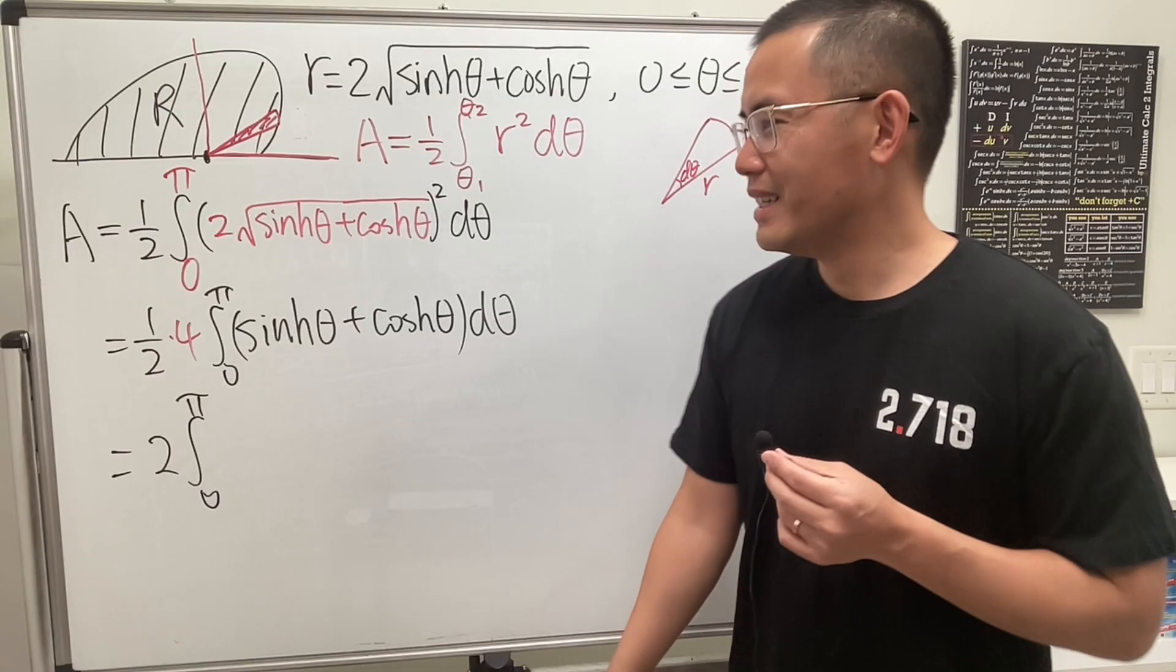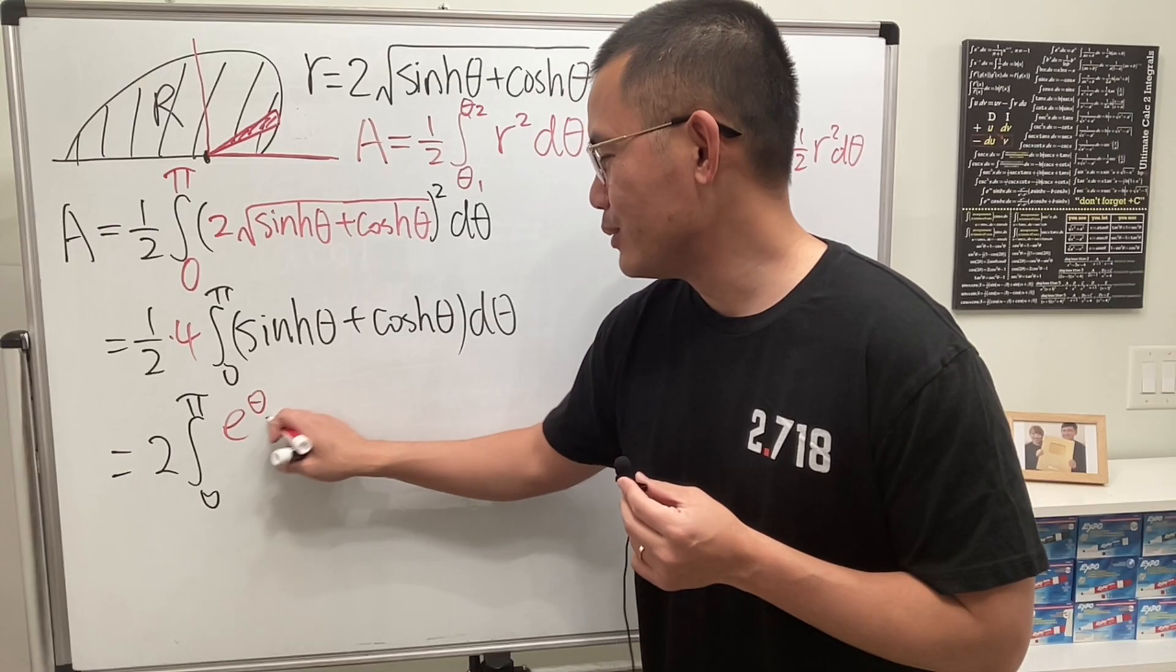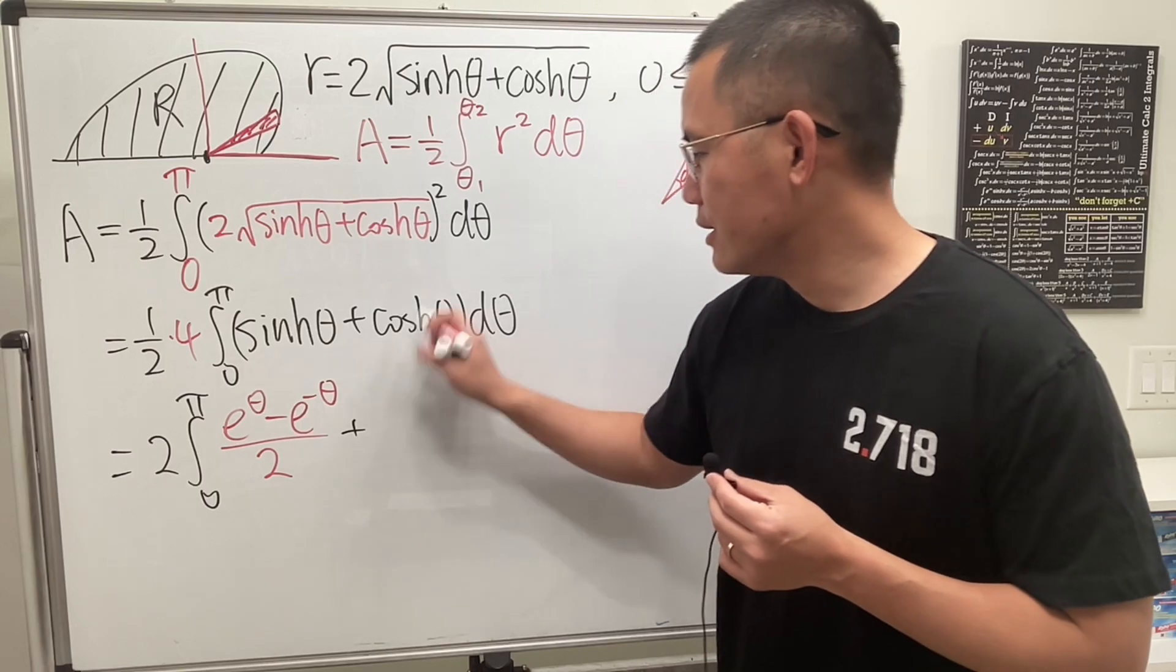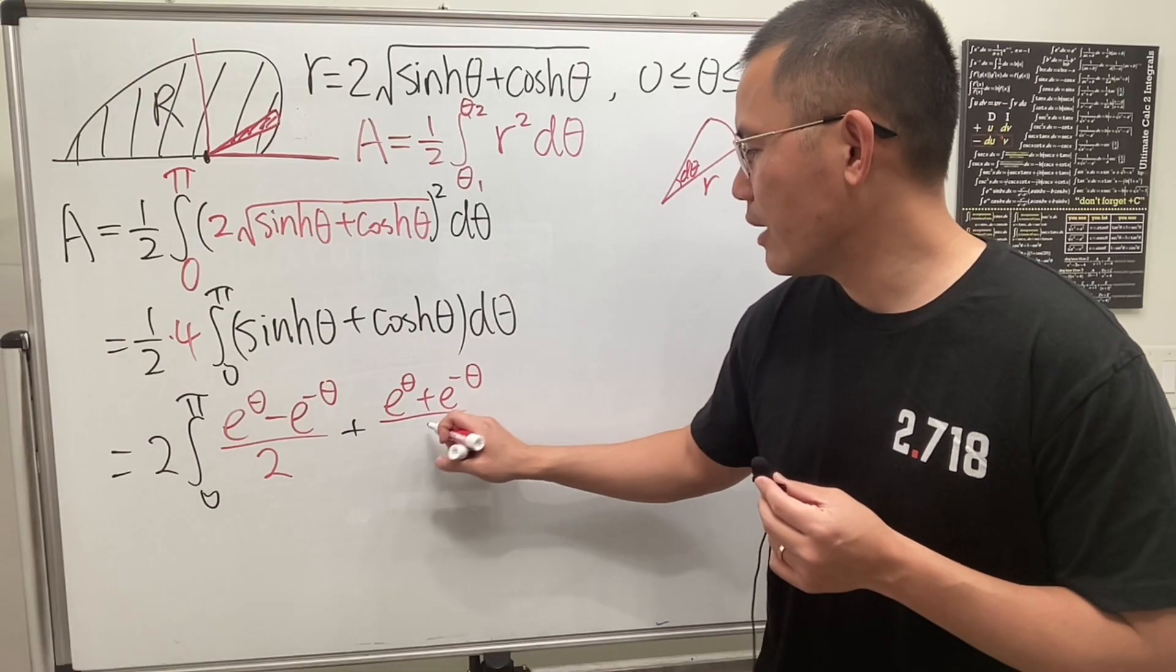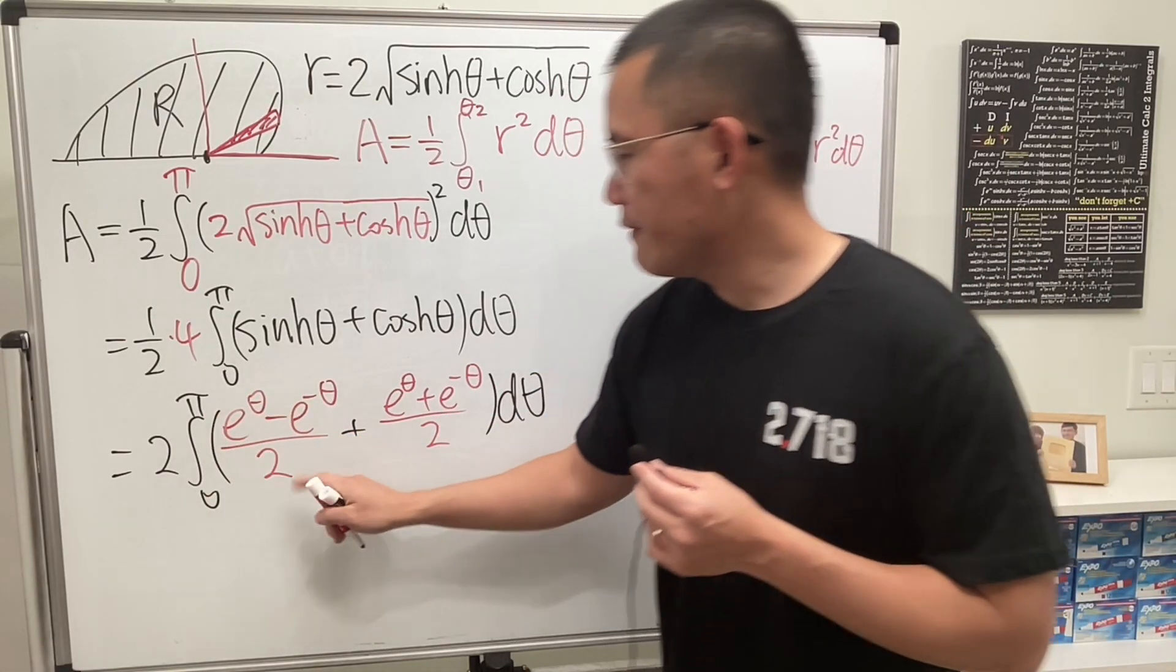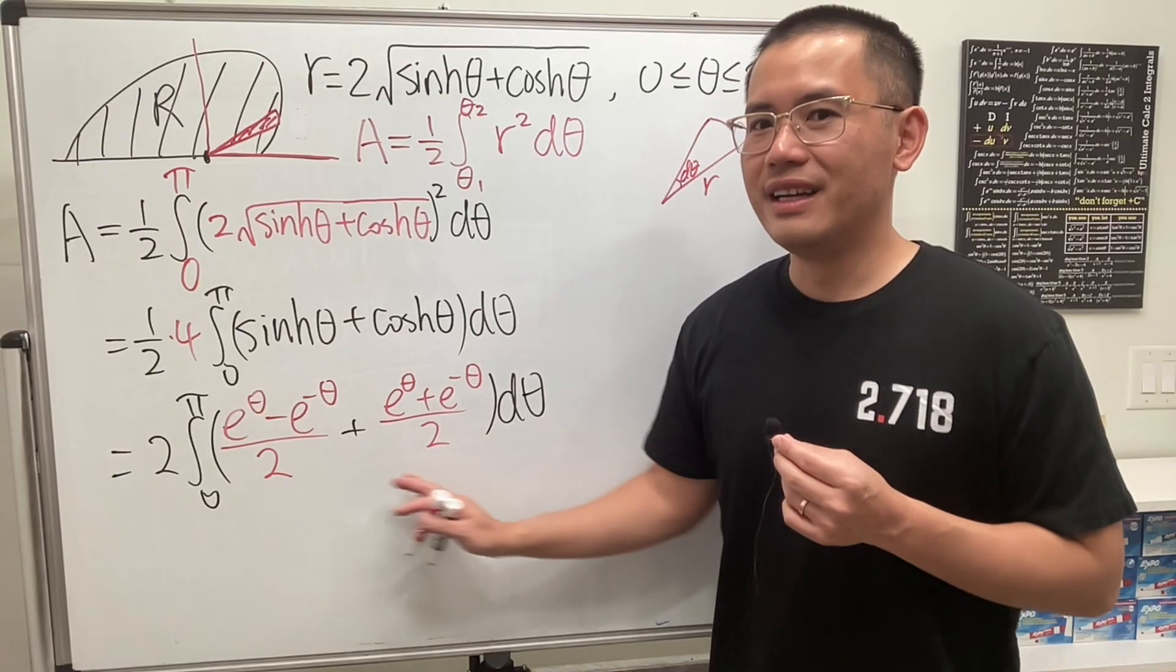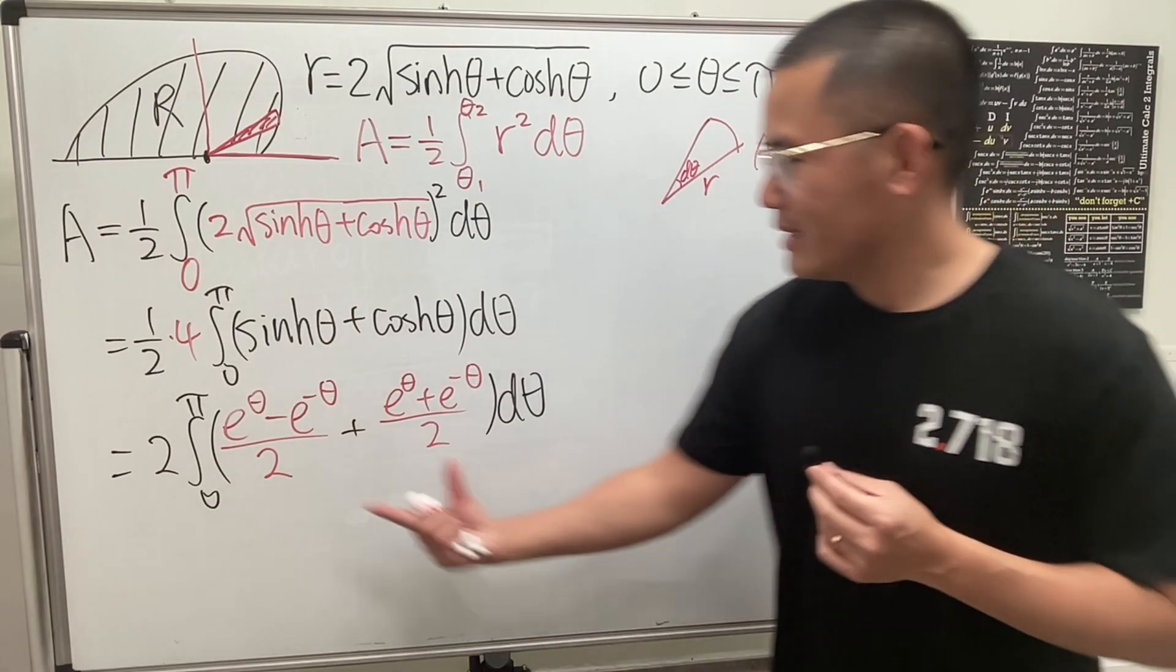But I remember this, so here. It's like if you do this so many times, you will just remember it. e to the theta minus e to the negative theta over 2. And then you add, this right here is e to the theta plus e to the negative theta over 2. In fact, this is the even part of e to the theta. This is, sorry, this is the odd part of e to the theta. And this is the even part of theta.